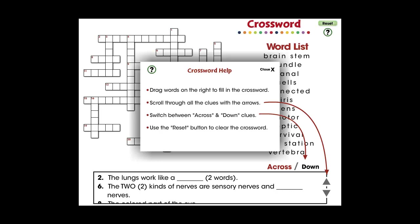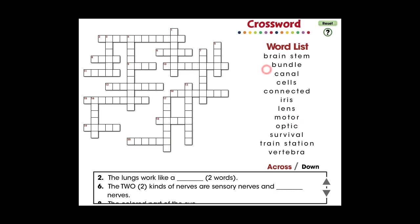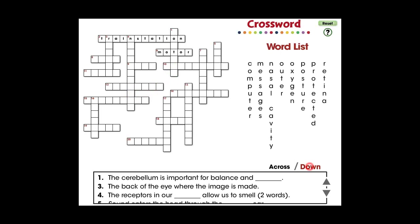In this crossword app, 20 vocabulary words are provided with across and down clues. For middle school, this app is great for vocabulary and comprehending all the words centered around the vocabulary in the topic of senses, nervous, and respiratory systems.